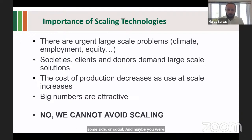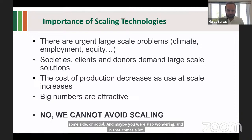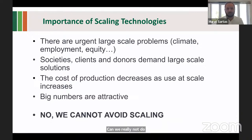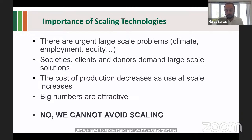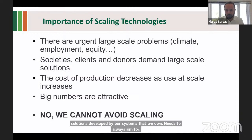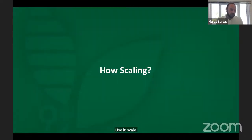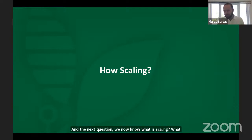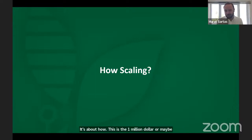Can we really avoid scaling? The answer is no. It doesn't mean that every one of us needs to work on it, but we have to understand that solutions developed by CGIAR systems need to always aim for use at scale. The next question — now that we know what scaling is and why we need it — is how. This is the million-dollar, maybe the billion-dollar question. When you look at the science of scaling and the experience, a few key learnings emerge.